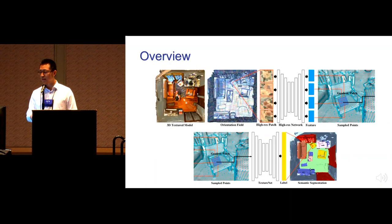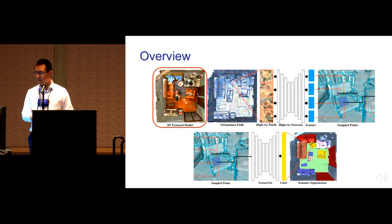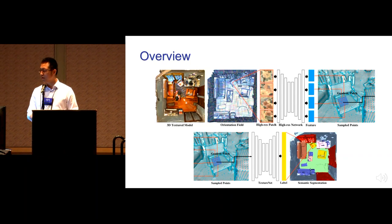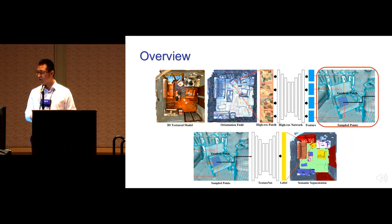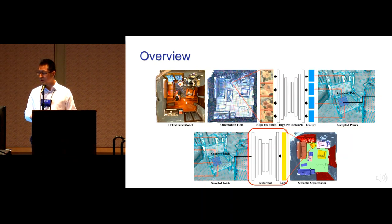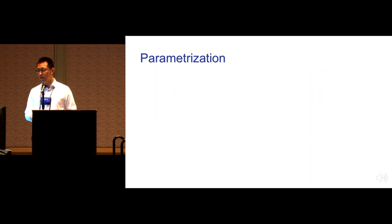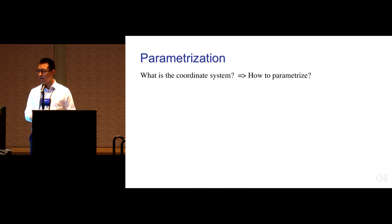Here is our pipeline for semantic segmentation. Our input is a texture mesh. We compute an orientation field for local surface parameterization, then extract high-resolution image patches. We pass them through a network to get high-resolution features associated to points on the mesh, then pass through a 3D network containing a texture convolution block to get the final semantic segmentation. The key question is: what is the best surface parameterization method?